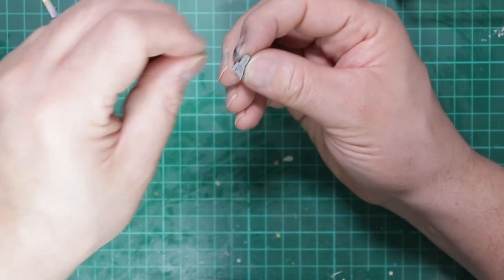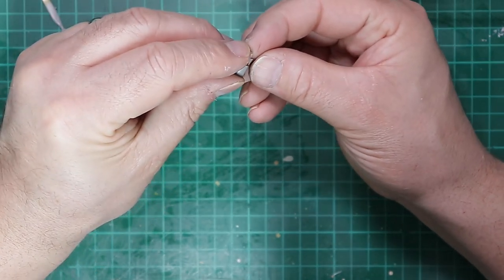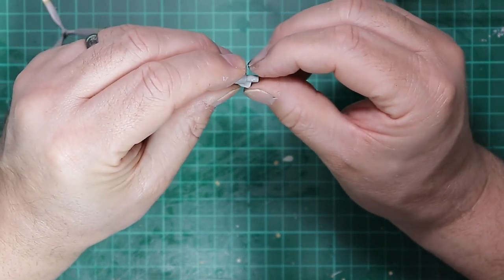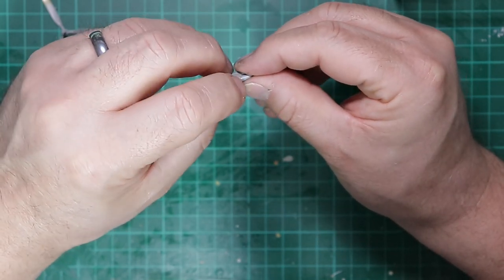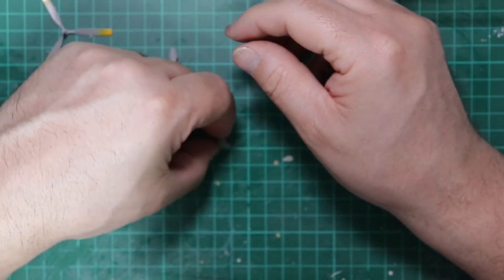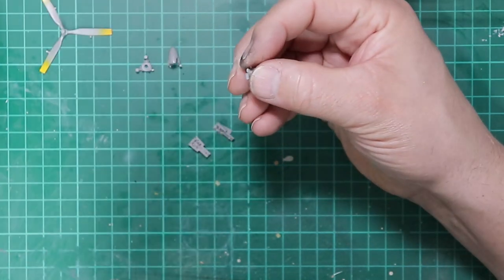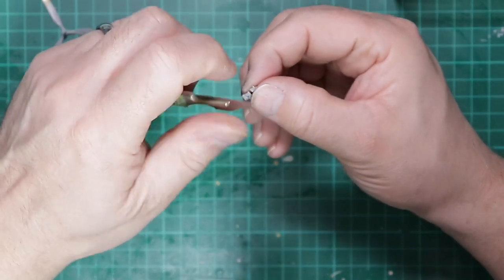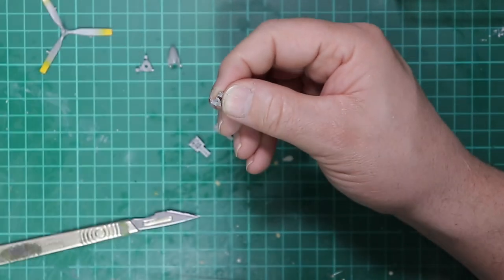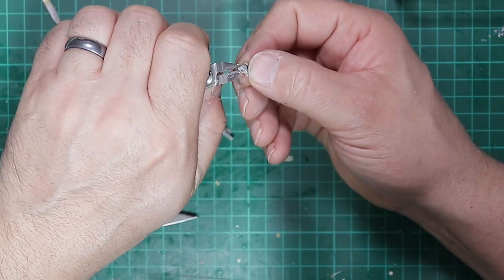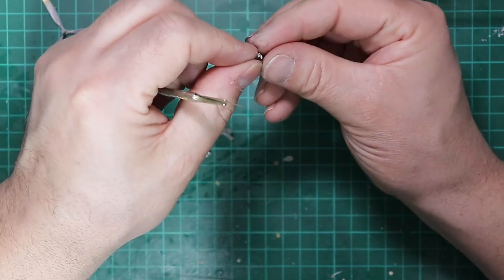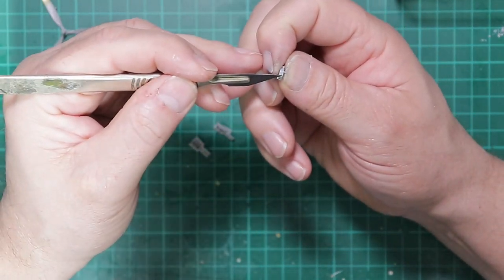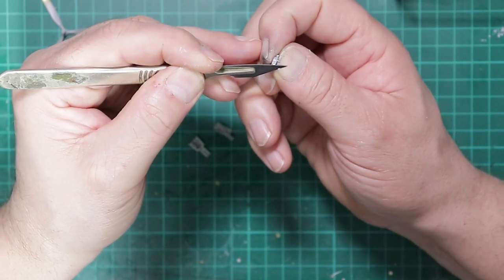And we're just going to conduct a dry fit to make sure everything does line up as expected, and everything is good, which it is. So I've got to remove a little bit. That's quite a substantial attachment point for such a small part. So I'll remove that with those. That's going to take a little bit of careful cleaning. There we go.